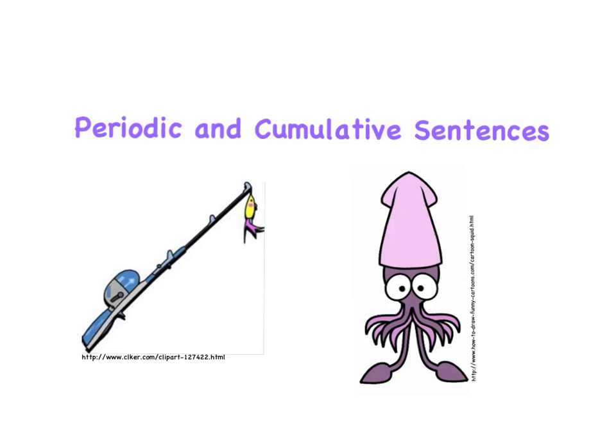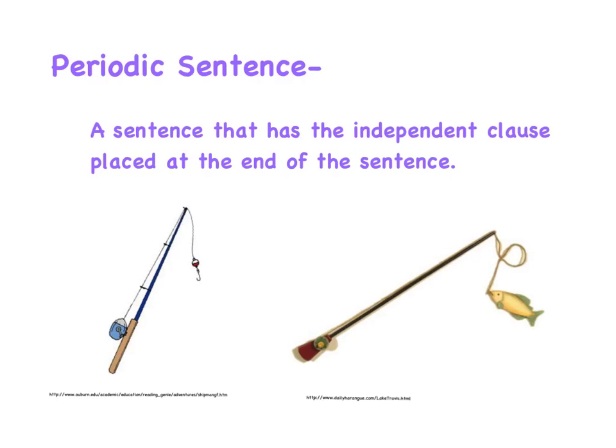During this presentation, I will define periodic and cumulative sentences and explain how to identify them. First, we'll start with a periodic sentence. A periodic sentence is a sentence that has the independent clause placed at the end of the sentence.